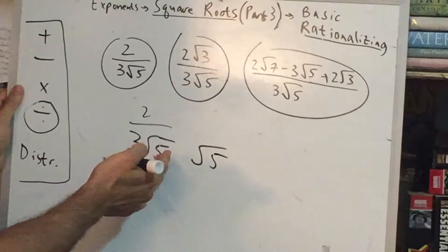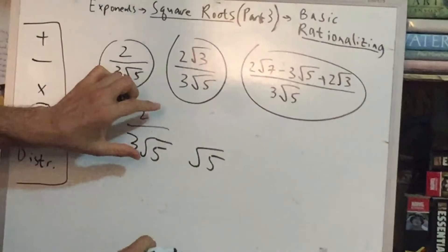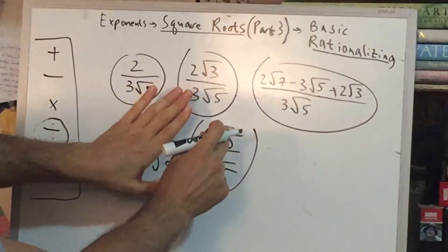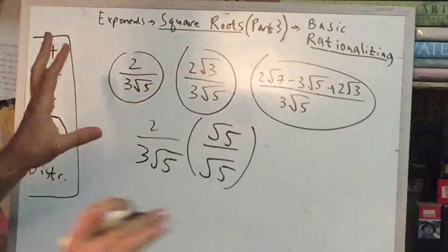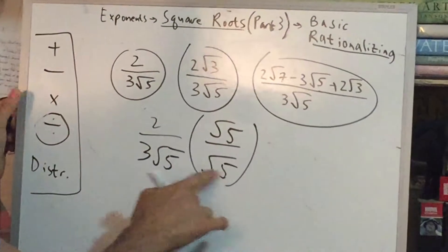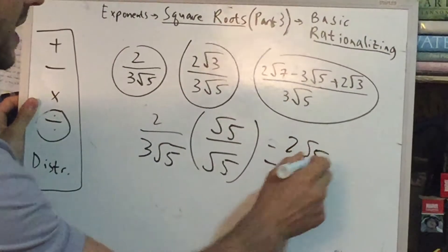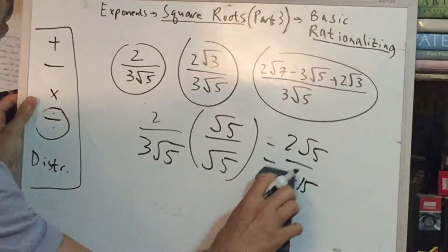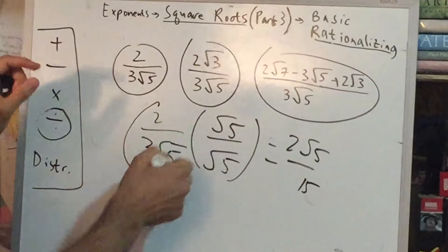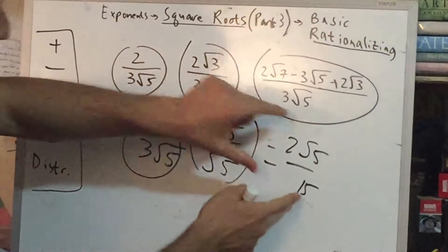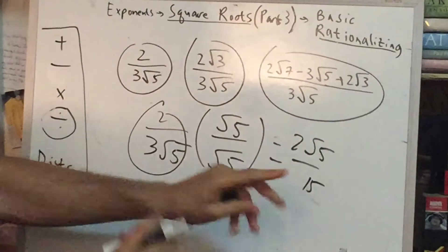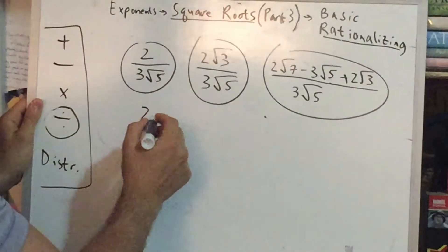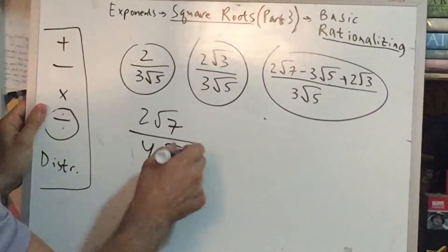Let's say we just have two over three root five. We want to get rid of the square root. How do you get rid of a square root? With another square root. But we can't just arbitrarily multiply the denominator because then we're changing the value. We know that if we multiply any number by one, the value is unaffected. So we multiply by root five over root five — a number divided by itself is one. By multiplying by this form of one, we're not changing the value, but we are changing the form because the square roots undo each other. You get two root five on the top and three times five, or 15, on the bottom. This is now rationalized — there's still a square root, but it's on the top. No square roots in the denominator, so this is considered done.